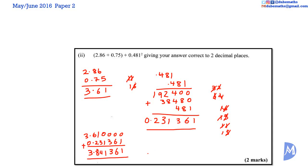To 2 decimal places, 3.841361. To 2 decimal places, 8, 4. 1 decimal place, 2. The first number to be discarded is less than 5 so we do not add 1. The answer is 3.84 to 2 decimal places.